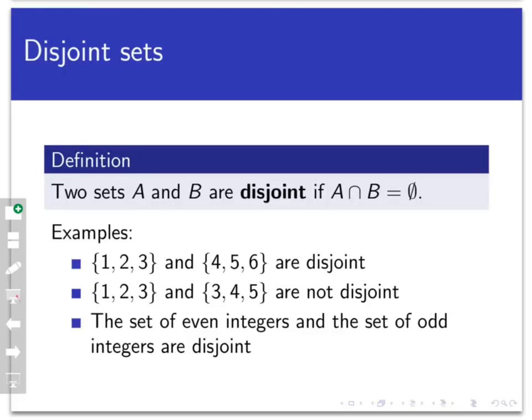So what does that term mean? We're going to define two sets A and B to be disjoint if their intersection is the empty set. So two sets are disjoint if they basically have nothing in common — their intersection is completely empty. For example, the set {1, 2, 3} and the set {4, 5, 6} are disjoint because there are no elements common to both.